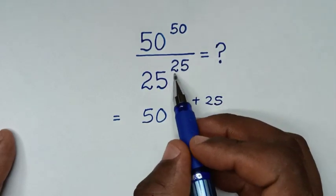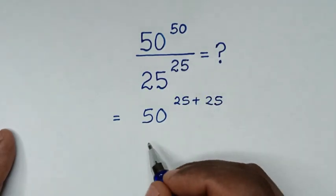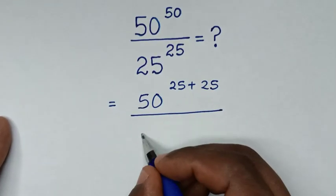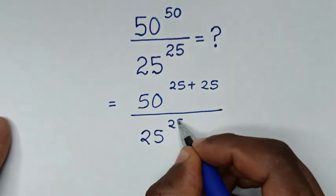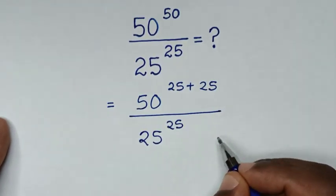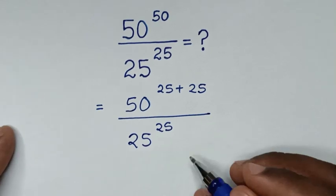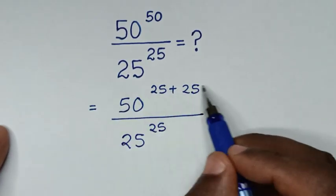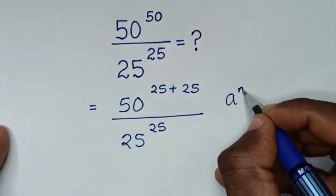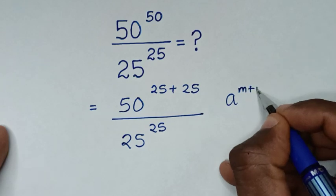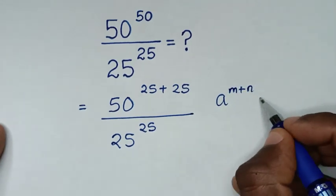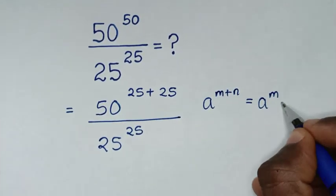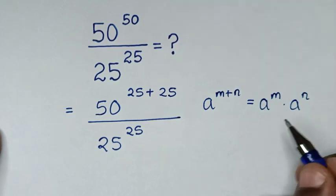With the same power of 25 in the denominator as exponent 25 power of 25. In the numerator, this is in the form of a^(m+n), which is equal to a^m times a^n.